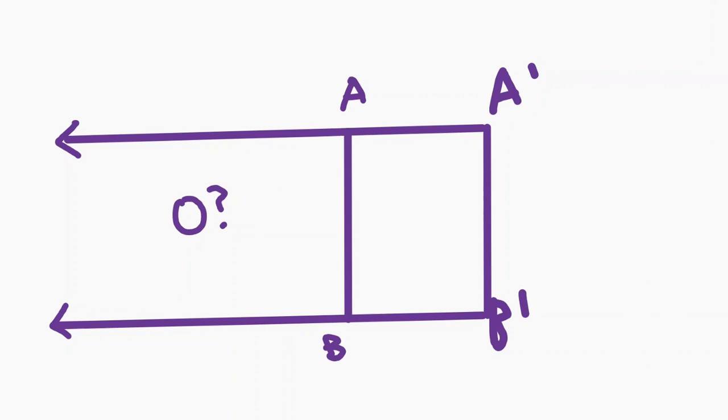Now, what if instead of finding the intersection of AA prime and BB prime, we take the intersection of AB prime and BA prime? This is actually perfectly valid as the segments are still parallel. However, for this time, the center of homothety, which we'll call point O sub 2, lies between AB and A prime B prime.